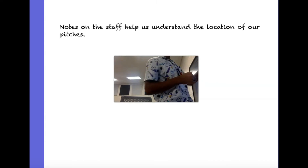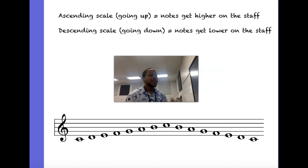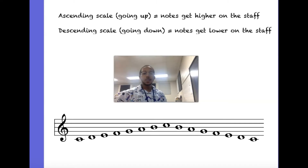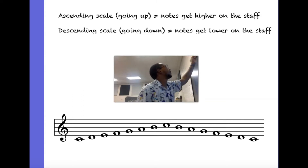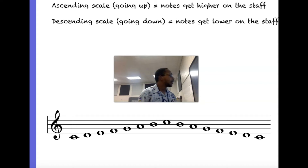Once we talk about that, I show them a picture of the staff and we talk about ascending and descending. Even for kindergartners and younger students, teach them those vocabulary words. You can use synonyms too, but make sure you tell them what those vocabulary words are and what they mean. When we look at a scale on the staff, we first want to talk about the staff — it's a collection of lines and spaces.